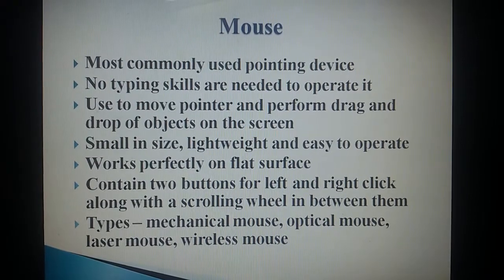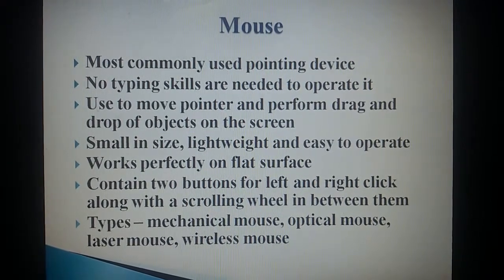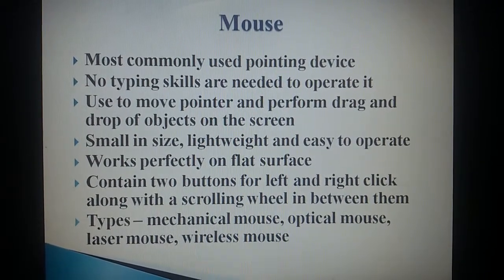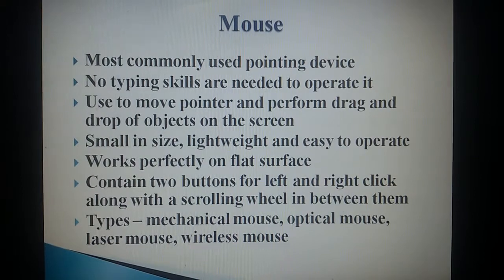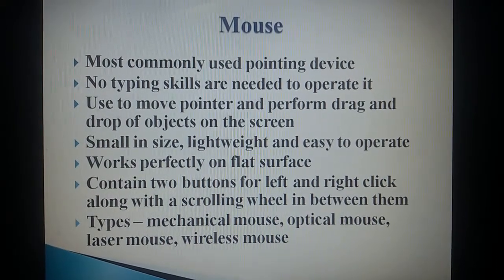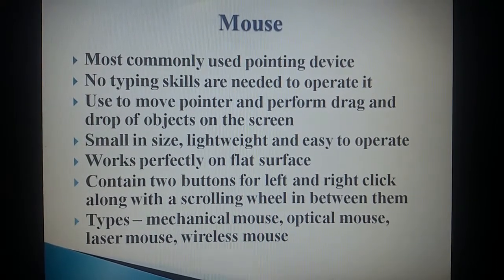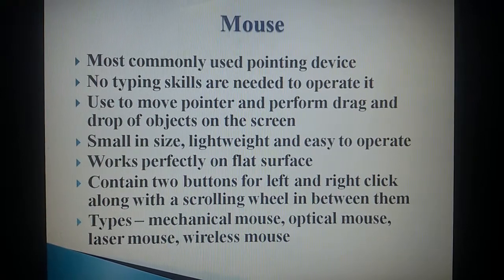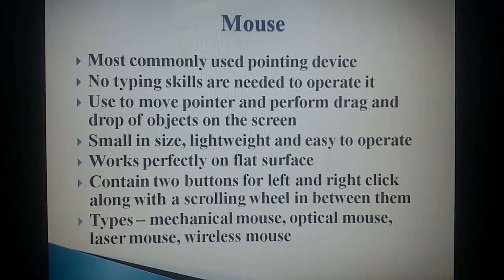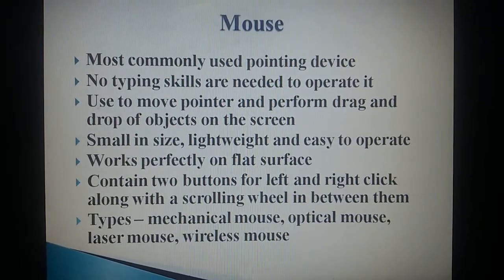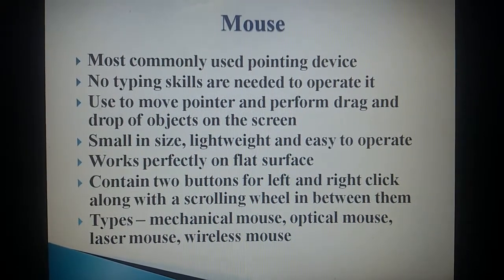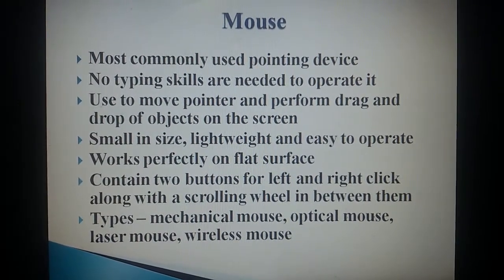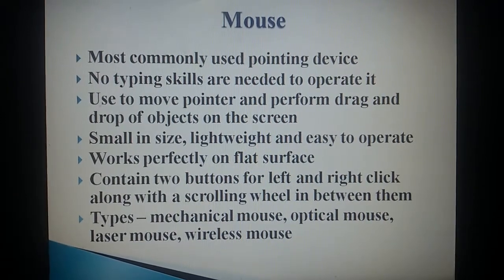Mouse: The most commonly used pointing device. No typing skills are needed to operate it. It is used to move the pointer and perform drag and drop of objects on the screen. Small in size, lightweight, and easy to operate, it works perfectly on a flat surface. It contains two buttons for left and right click along with a circular scrolling bead in between them. Types of mouse available are: mechanical mouse, optical mouse, laser mouse, and wireless mouse.